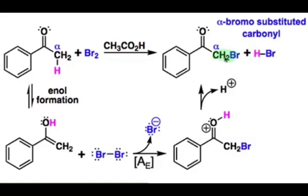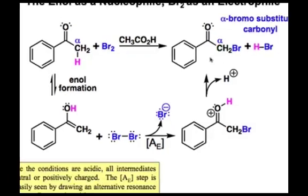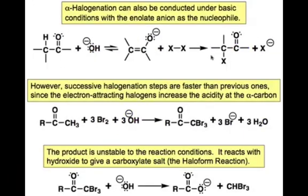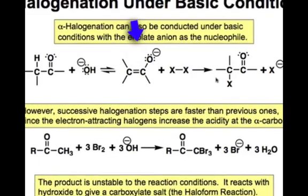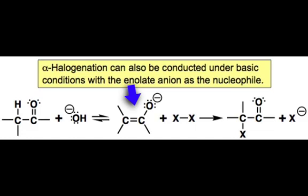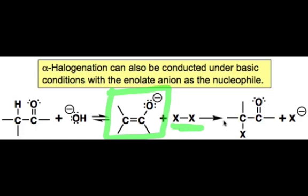However, under basic conditions, the situation is slightly different. Deprotonation of the ketone generates an enolate intermediate, which then attacks the electrophilic halide to give a neutral ketone product alongside a negative halide anion.